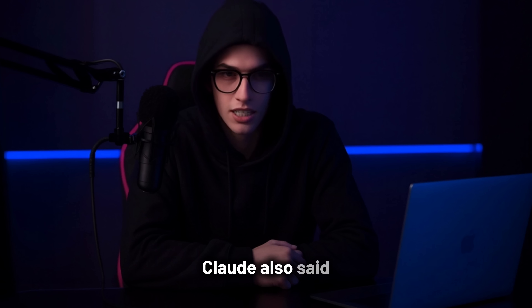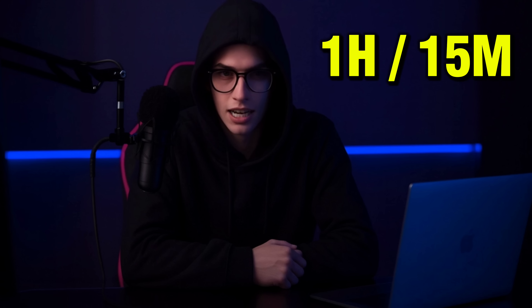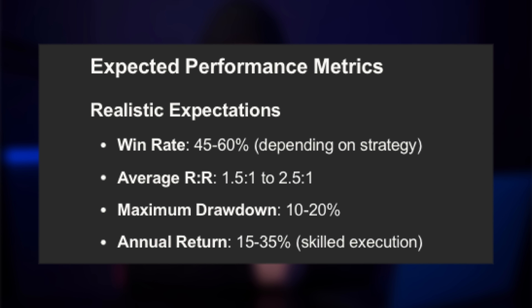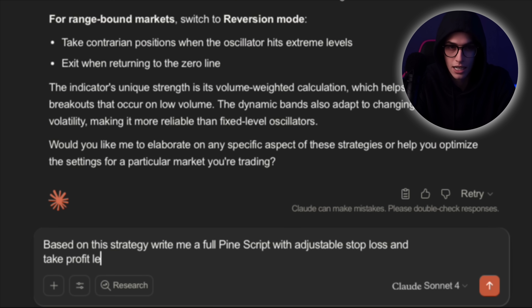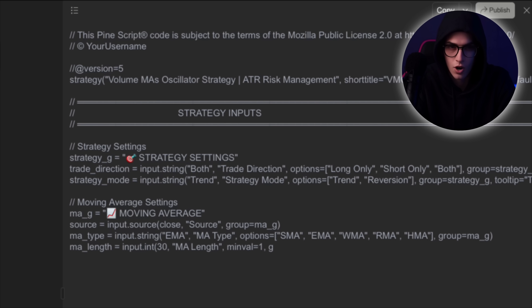But it didn't stop there. Claude also said the strategy works best when you combine multiple timeframes — use the higher timeframe, like the 4-hour or daily, to set the overall trend, and then go down to something like the 1-hour or 15-minute to actually enter your trades. It claimed that with the right filters, this system could hit a win rate of around 60% with a solid risk-reward setup, all based on volume, volatility, and structure — not just random entries. So I gave Claude one more prompt: take that strategy and write me a full PineScript version of it, with ATR stops and targets, customizable risk-reward, and filters I can turn on or off. And just like that, it gave me clean, modular code I could drop straight into TradingView.